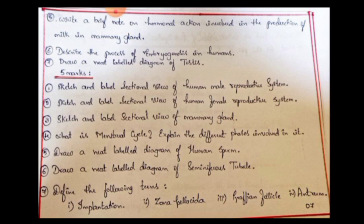5-mark questions: These are draw-and-explain or draw-and-elaborate questions — just draw directly. Neat diagram practice is important for marks. Expected diagrams include: human male reproductive system, human female reproductive system, mammary gland, and human sperm — all are diagram-based questions.